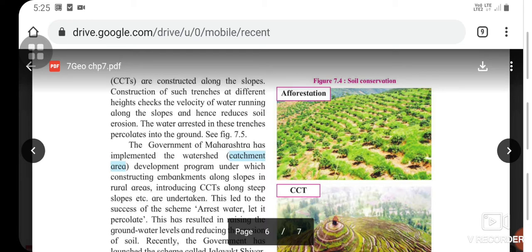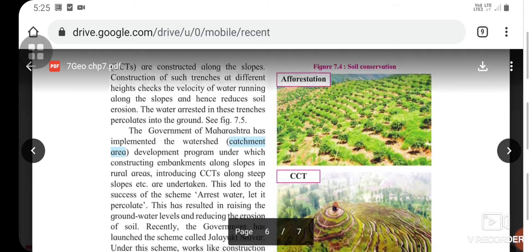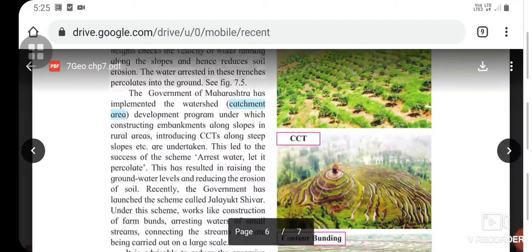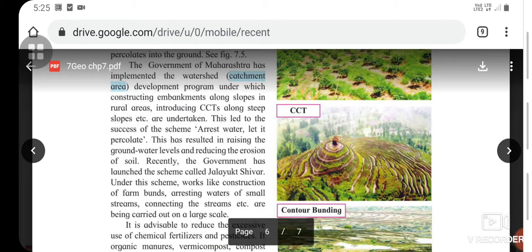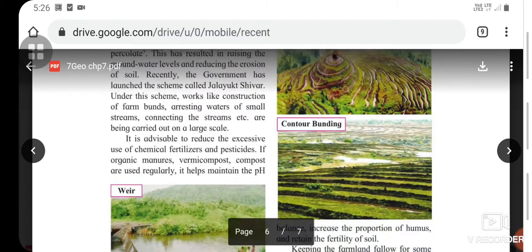Construction of such trenches at different heights checks the velocity of water running along slopes and reduces soil erosion. The water arrested in these trenches percolates into the ground. The Government of Maharashtra has implemented the watershed catchment area development program, under which constructing embankments along slopes in rural areas, introducing CCTs along steep slopes are undertaken. This led to the success of the scheme 'Arrest water, let it percolate.' This has resulted in raising groundwater levels and reducing soil erosion. Recently the government launched the scheme called Jalyukt Shivar.